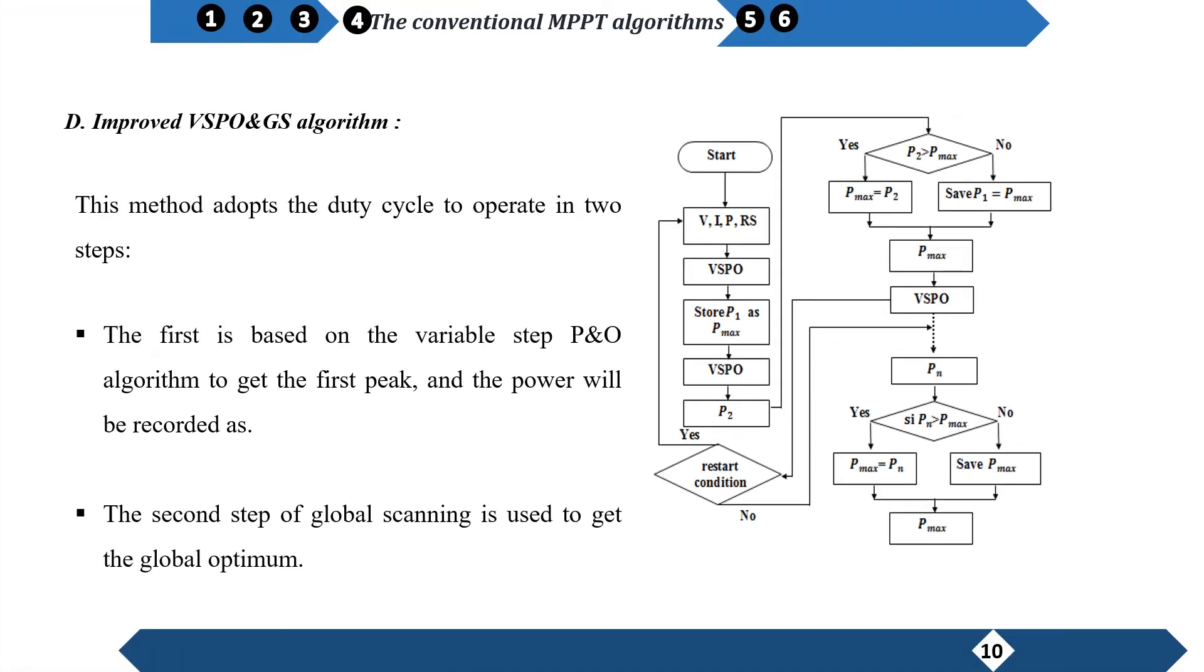Improved VSP&O with a global scanning. This method adopts the duty cycle to operate in two steps. The first is based on the variable step P&O algorithm to get the first peak and the power will be recorded. The second step of global scanning is used to get the global optimum.